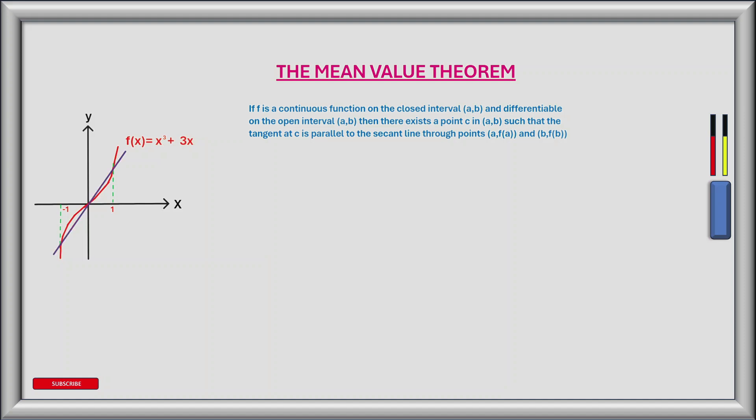I've now drawn the secant line on the graph between the points minus 1 and 1 on the x-axis, shown by the purple line. The secant line on this diagram indicates the average rate of change between those two points minus 1 and 1. So now we just want to find the point or points c on the x-axis where f prime of c is equal to the average rate of change, which is the instantaneous rate of change.